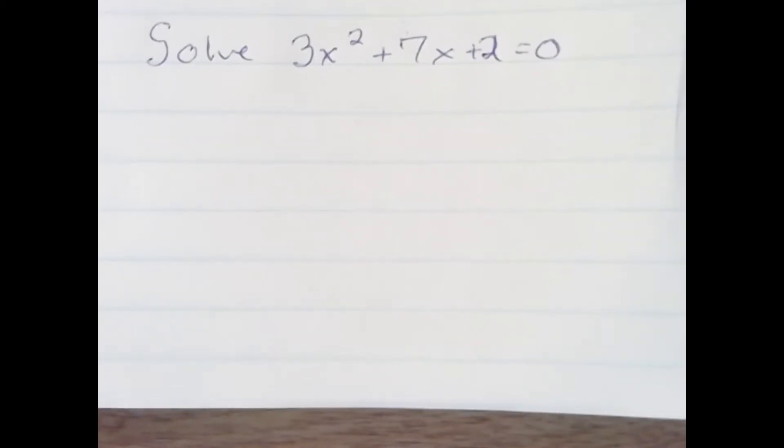Here we're going to solve the quadratic 3x squared plus 7x plus 2 equals 0. To solve it, we'll use factoring.